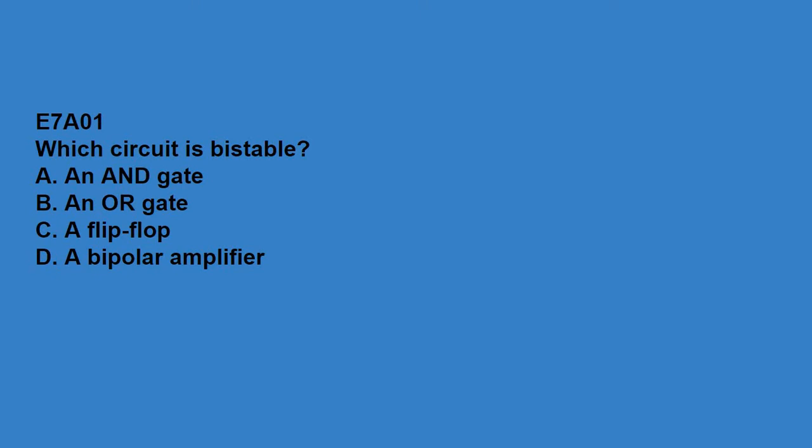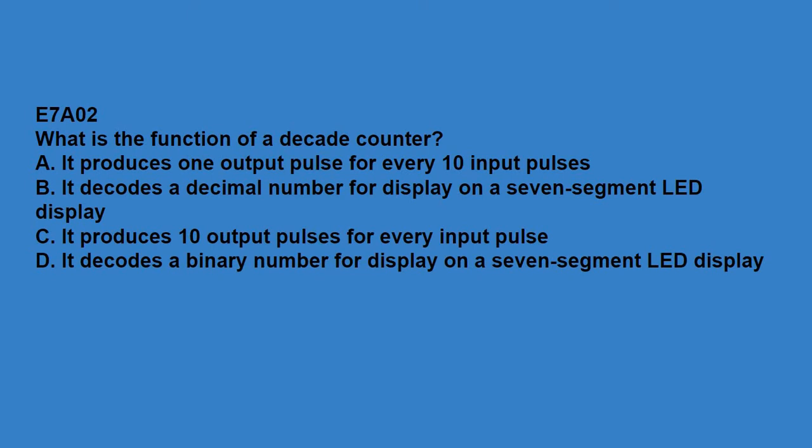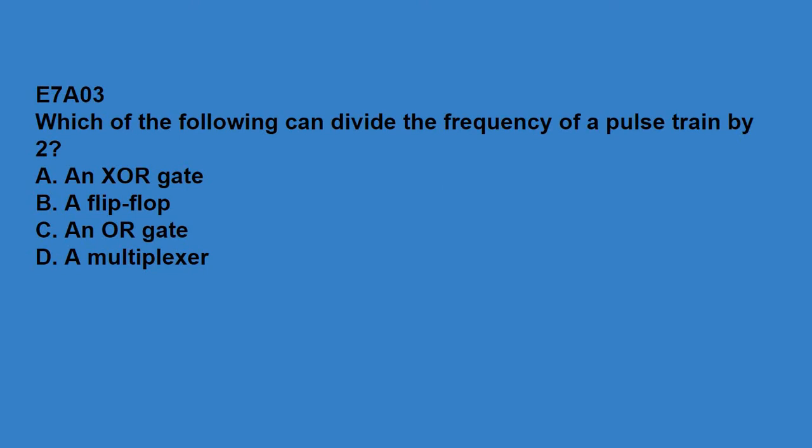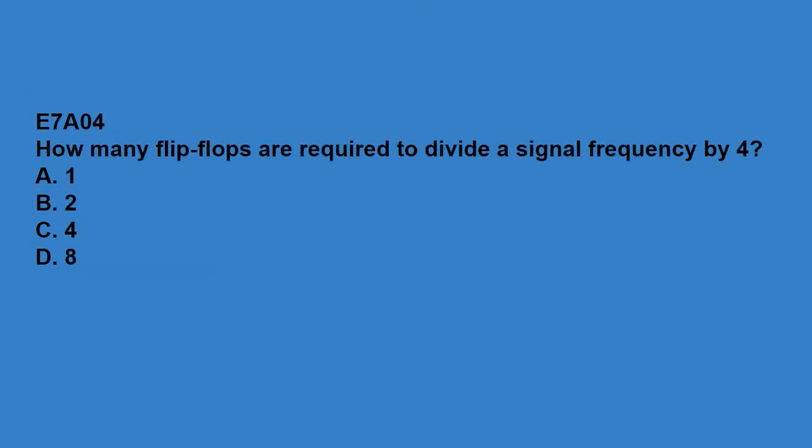E7A01, which circuit is bistable? That is a flip-flop. E7A02, what is the function of a decade counter? It produces one output pulse for every ten input pulses. E7A03, which of the following can divide the frequency of a pulse train by two? That's a flip-flop.